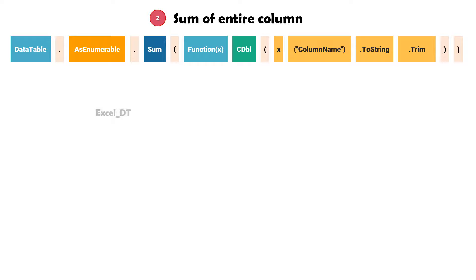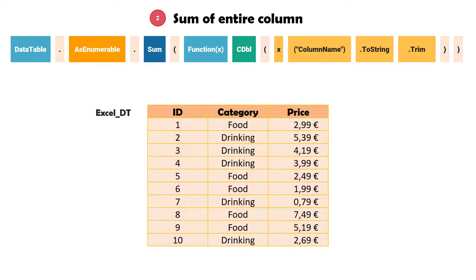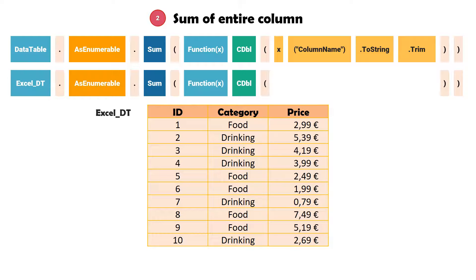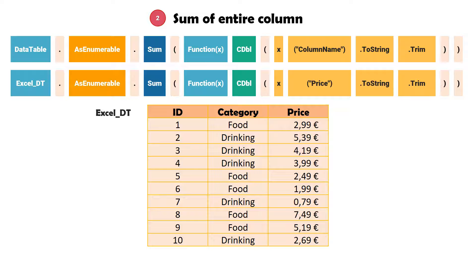Let's see the following example to understand it better. I have a table which consists of three columns. I want to sum the column price. I write first the name of the table, then the same parts of the statement as mentioned before, and I set the column name. As mentioned, we can also set the column index instead of the column name — in this case we can write the number 2 as index. The statement is ready.